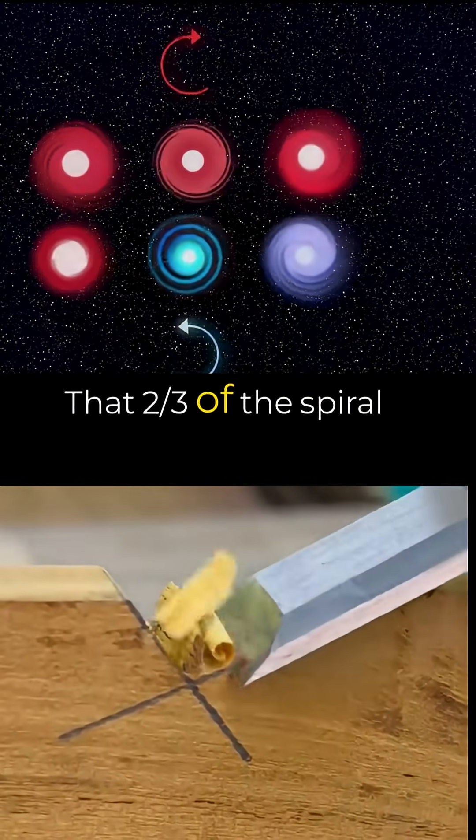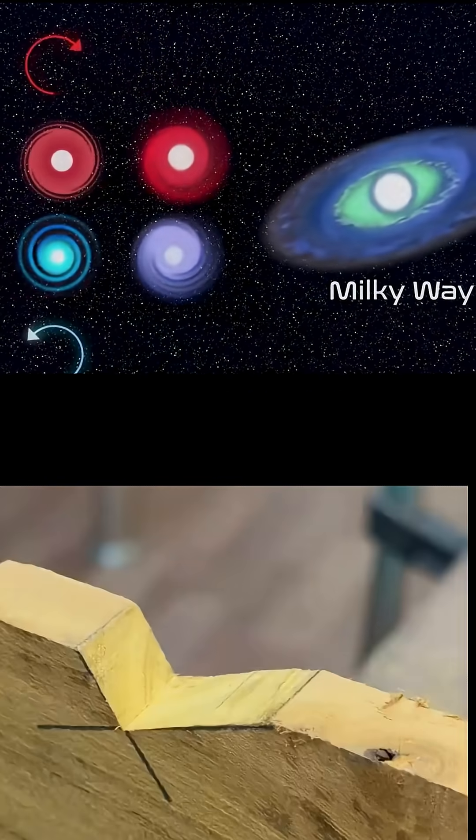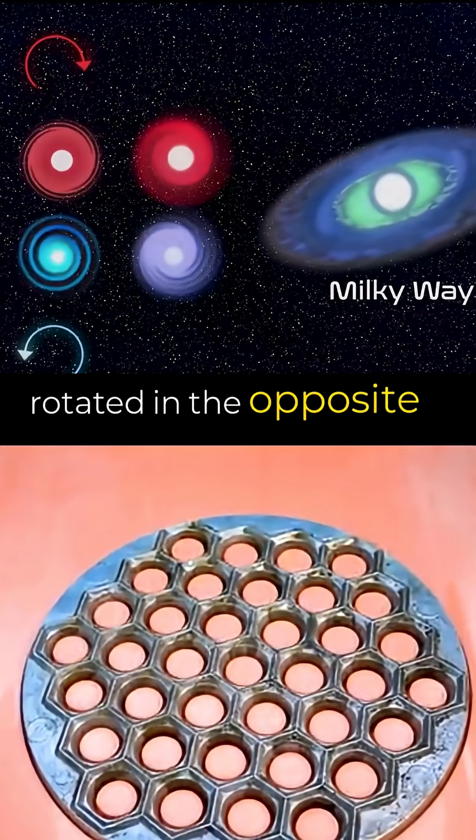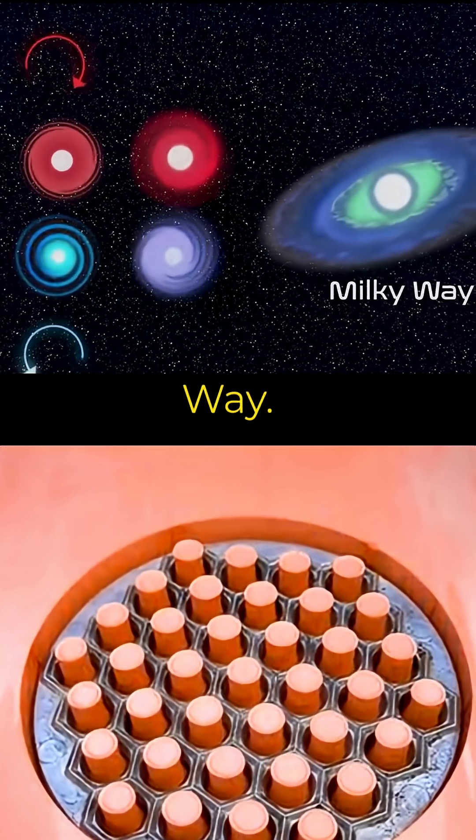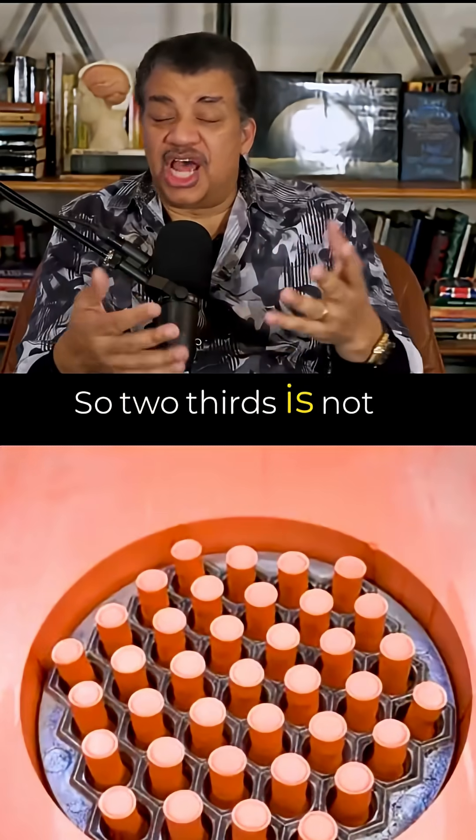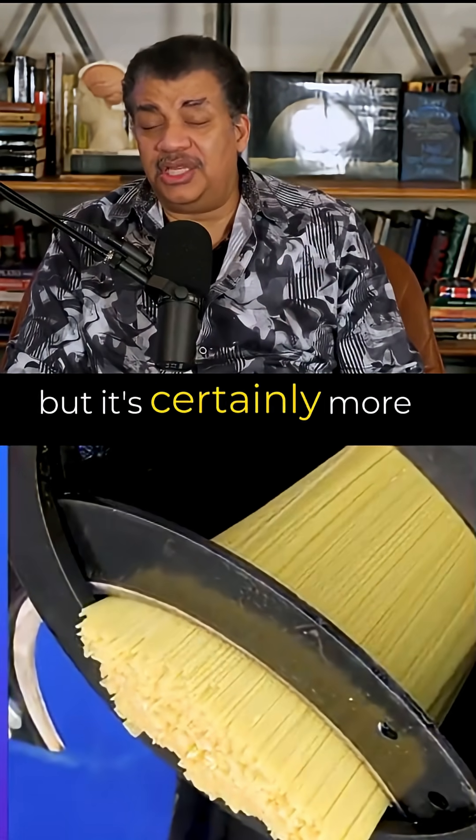So what did they find? That two-thirds of the spiral galaxies measured rotated in the opposite direction as the Milky Way. So two-thirds is not a hundred percent, but it's certainly more than half.